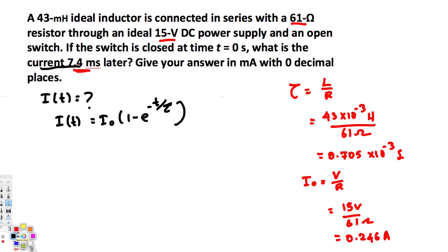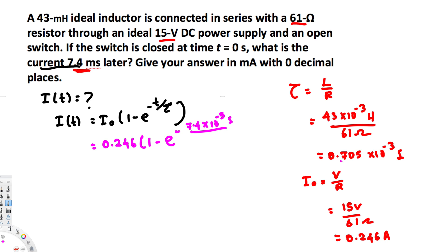Now we can plug these values into the equation. i of t equals 0.246 times one minus e to the power of negative 7.4 times 10 to the minus 3 seconds divided by 0.705 times 10 to the minus 3 seconds. The units of 10 to the minus 3 and seconds cancel, leaving a unitless exponent.